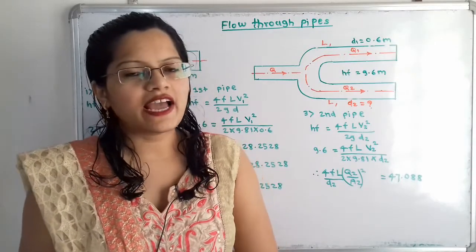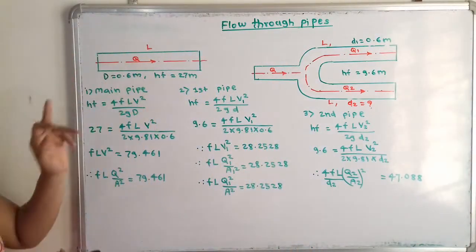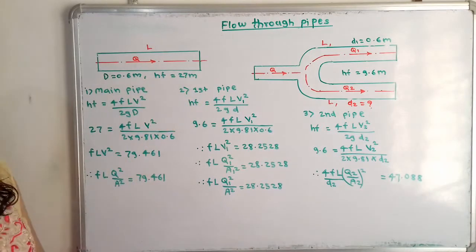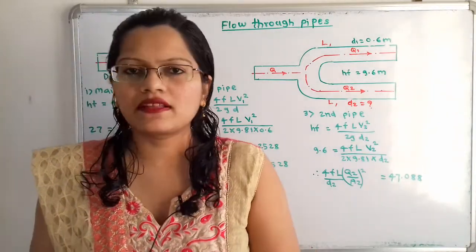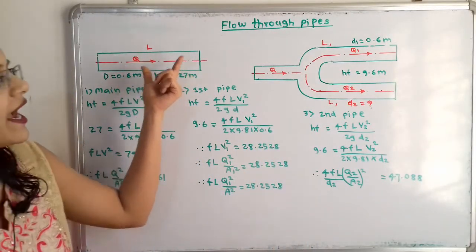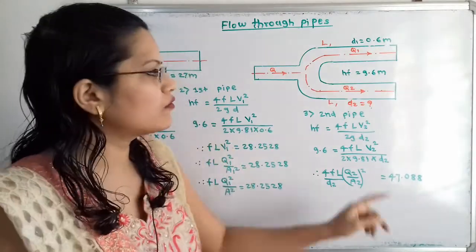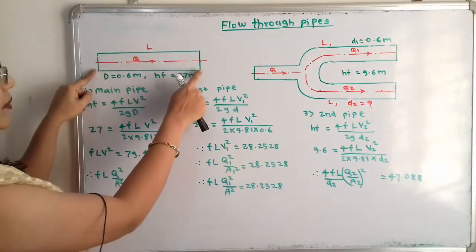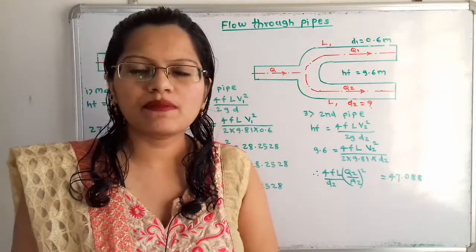We will understand the diagram as per the given data. Here there is a single pipe having a rate of flow Q, diameter D given as 0.6 m, and friction head given as 27 m. The length will be L. Now we have to connect a parallel pipe. The condition is that initially the friction head is 27 m and we have to reduce the friction head to 9.6 m, while the length remains the same L. The main pipe and the parallel pipe both have the same length L.